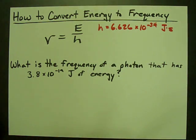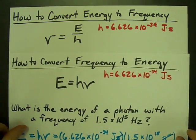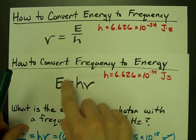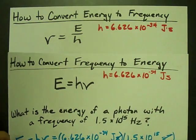This is a rearrangement of the formula that we used to convert frequency to energy. We just divide it by H instead of multiplying the frequency by H.